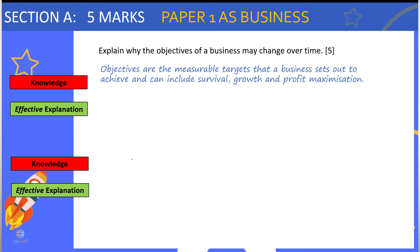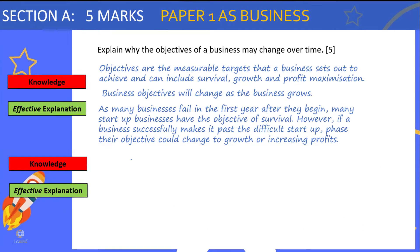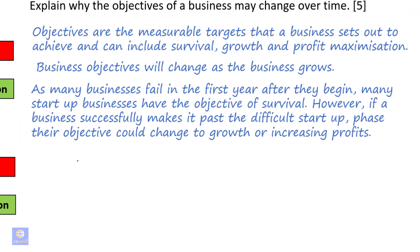We start with a quick definition of business objectives, then give the first knowledge point of why objectives may change over time: business objectives will change as the business grows. Then we give an effective explanation showing how business objectives will change from survival as a business begins to grow or profits increase. So now we've got our first explanation done.